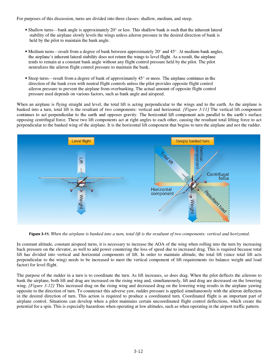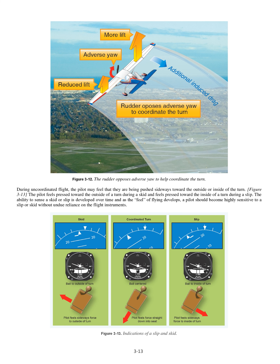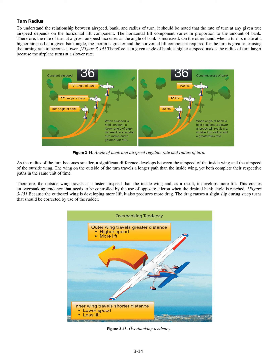Coordinated flight is an important part of airplane control. Situations can develop when a pilot maintains certain uncoordinated flight control deflections, which create the potential for a spin. This is especially hazardous when operating at low altitudes, such as in the airport traffic pattern. During uncoordinated flight, the pilot may feel that they are being pushed sideways toward the outside or inside of the turn. The pilot feels pressed toward the outside of a turn during a skid and feels pressed toward the inside of a turn during a slip. The ability to sense a skid or slip is developed over time and as feel develops, a pilot should become highly sensitive to a slip or skid without undue reliance on flight instruments.